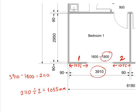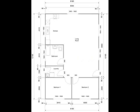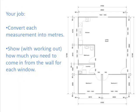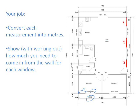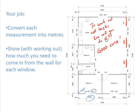With your house plan you're going to have to do this for every single part, and as you can imagine it's not always easy. Your job is first to convert each of the measurements from millimeters into meters. You also have to show, with working, how much you need to come in from the wall for each window. Be careful here — on this wall there are three sections of wall, so you'll be dividing by three rather than two. There are two windows and one door on this wall, so you'll want to take those windows and that door away from the total measurement to work out how much wall you're dealing with. Good luck.